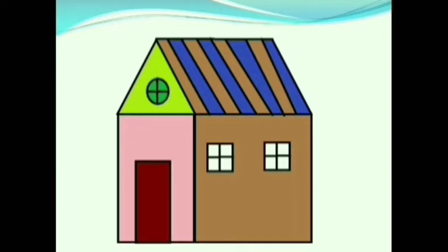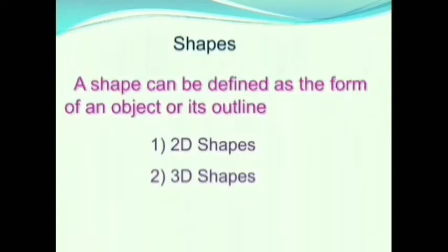The house is made using Triangle, Square, Rectangle and Circle. Now we are thinking, what are these? A shape can be defined as the form of an object or its outline. Now we will learn the types of shapes.